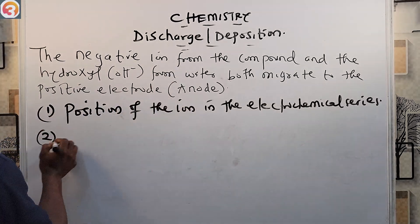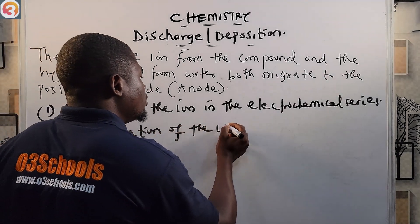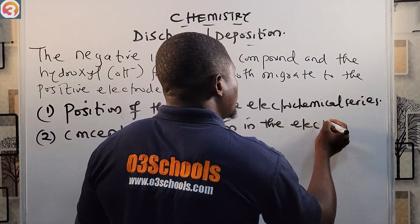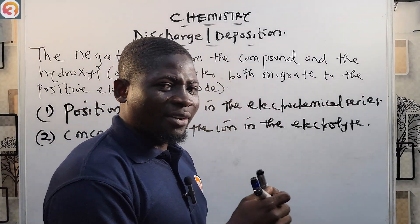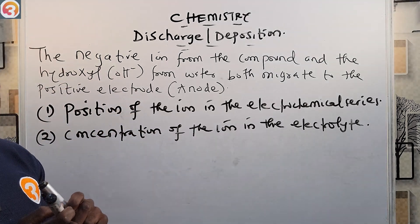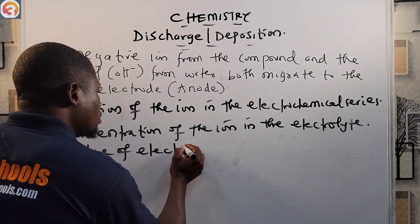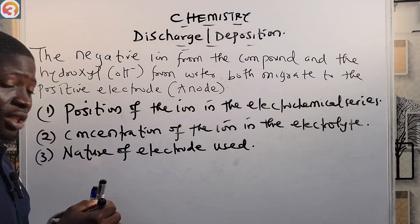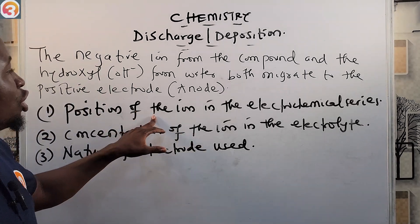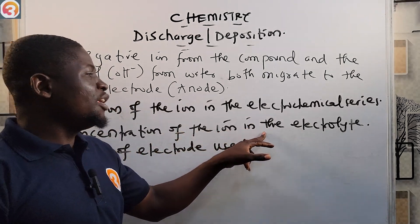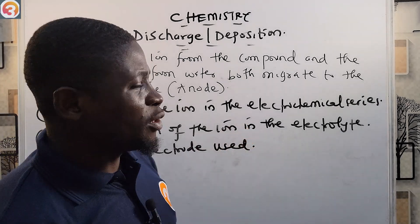Factor two is the concentration of the ion in the electrolyte. Factor three is the nature of the electrode used. These are the three factors that govern the discharge of an ion during electrolysis.